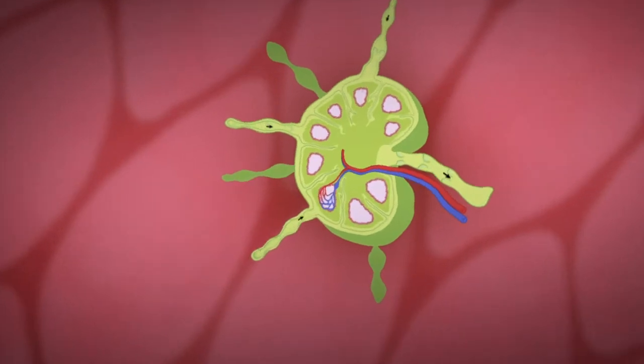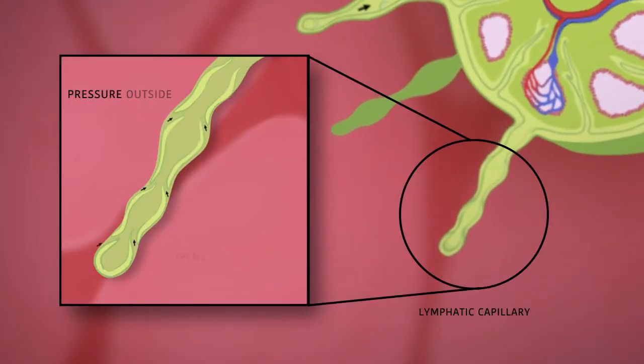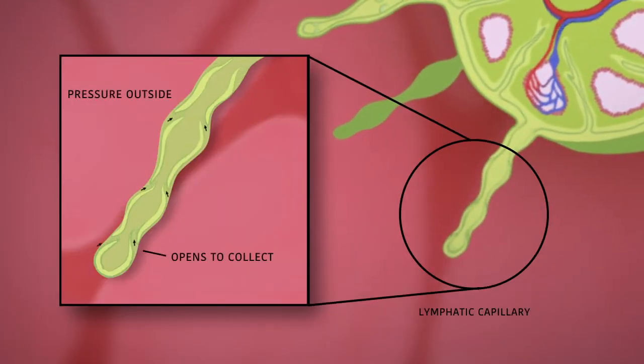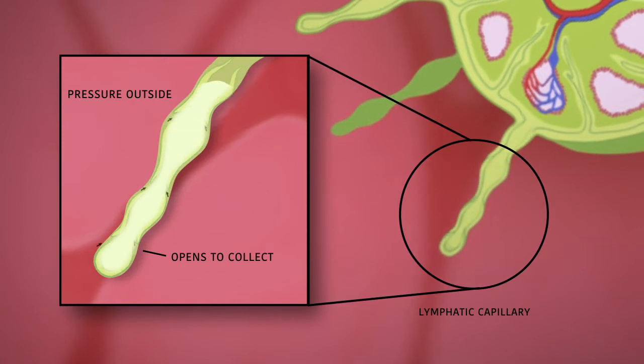Fluid gets collected when the pressure outside a lymphatic vessel is higher than inside. When the pressure inside rises, it prevents the fluid from going back out.